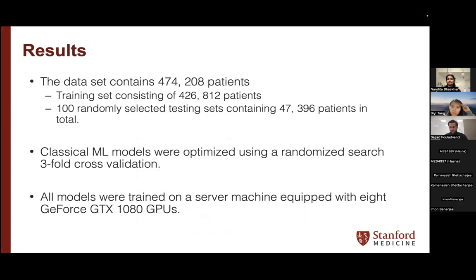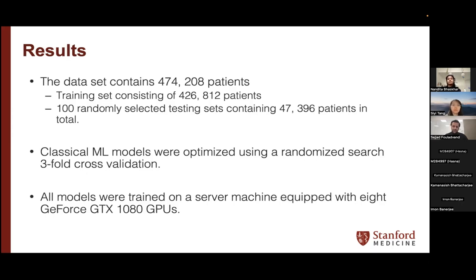The dataset was rather large — over 474,000 patients, less than half a million. For each patient, we had hundreds of diagnoses and procedures, creating billions of records, which created lots of challenges for handling big data — sorting, matching everything was different due to the size. We used 426,000 patients for training and 47,000 patients for testing. Classical machine learning models were optimized using randomized three-fold cross-validation. We trained all models on GeForce GTX 1080 GPUs on a server at the College of Pharmacy at the University of Kentucky.